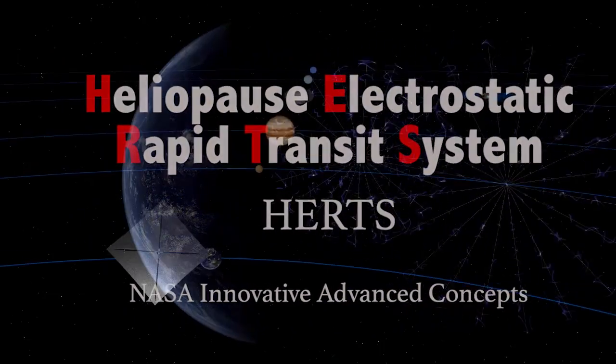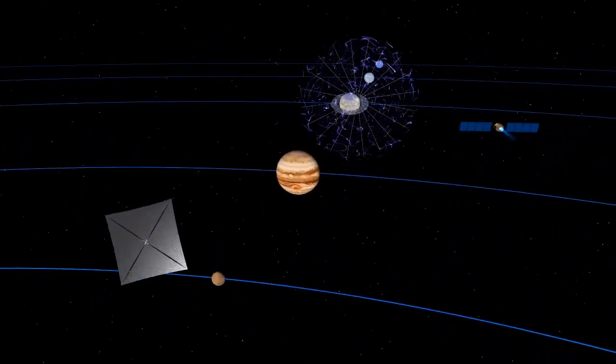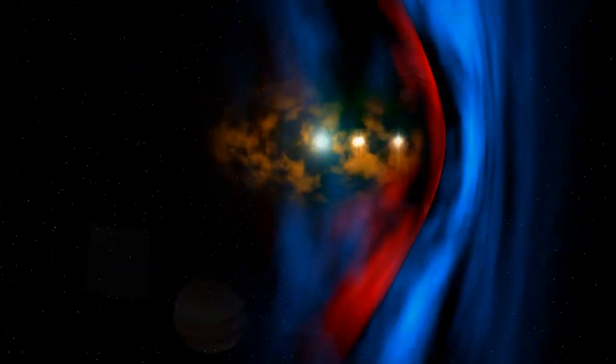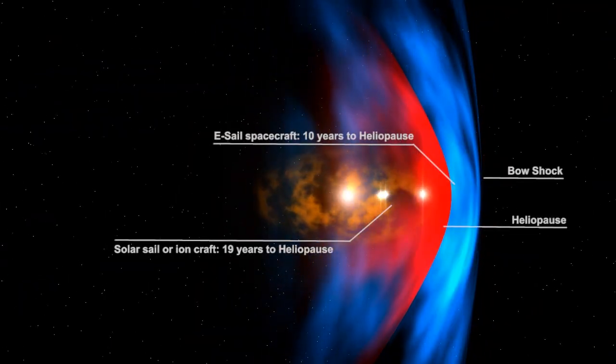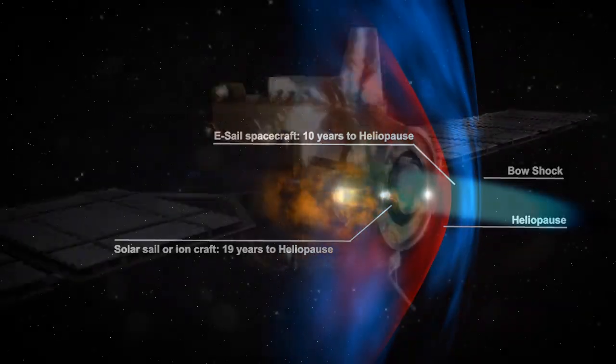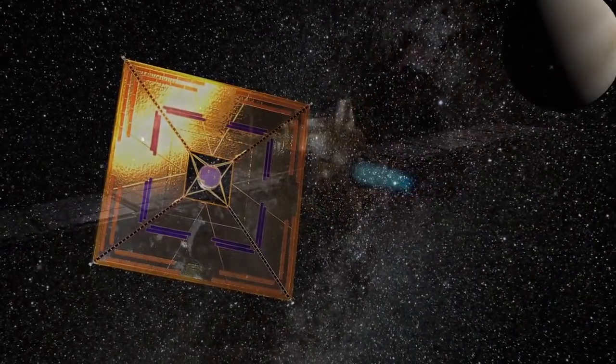The Hertz Electric Sail, or E-Sail, could send spacecraft to the edge of the solar system, known as the heliopause, approximately 100 astronomical units from Earth, in less than 10 years, much faster than any current propulsion system.